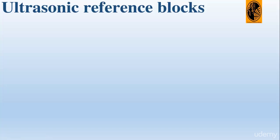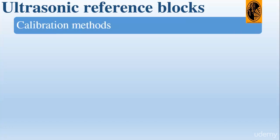Since we are talking in this section about ultrasonic reference blocks, they are used for calibration, so we should absolutely talk about the calibration methods first. Calibration refers to the act of evaluating and adjusting the precision and accuracy of measurement equipment. In ultrasonic testing, several forms of calibration must occur.